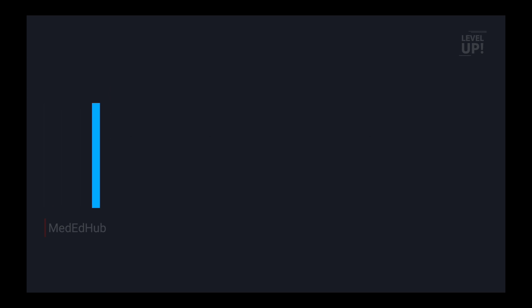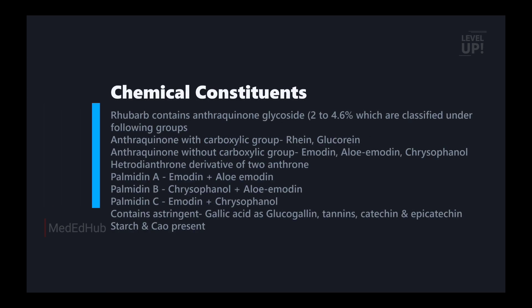The next part is chemical constituents. Rhubarb contains anthraquinone glycosides, which are 2–4.6%, classified under the following groups. With carboxyl group: rhein and glucurrhein. Without carboxyl group: emodin, aloe-emodin and chrysophanol.